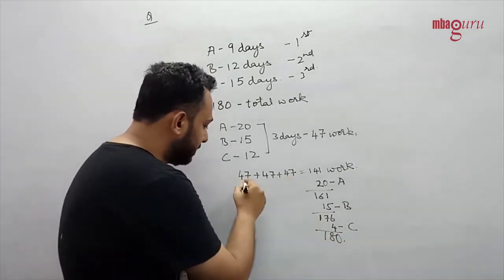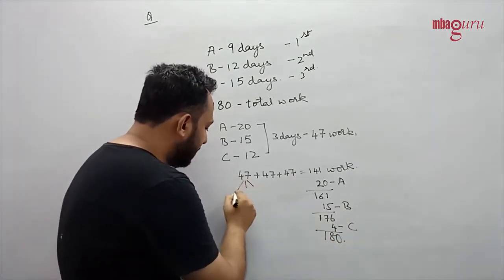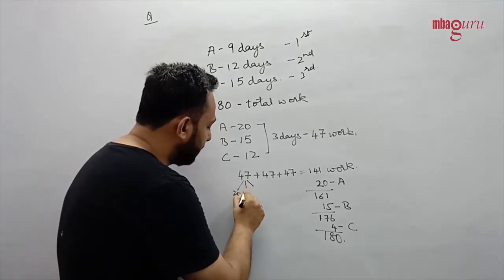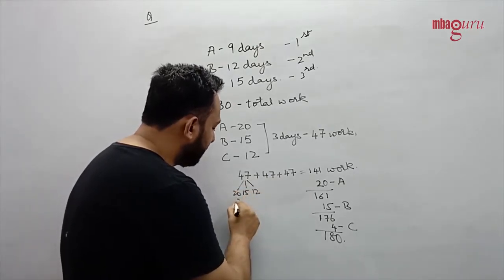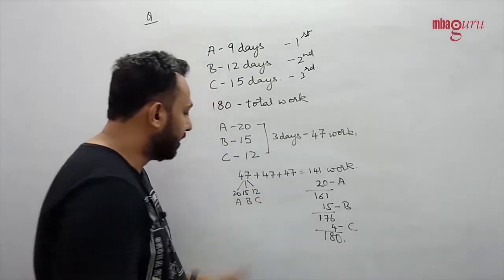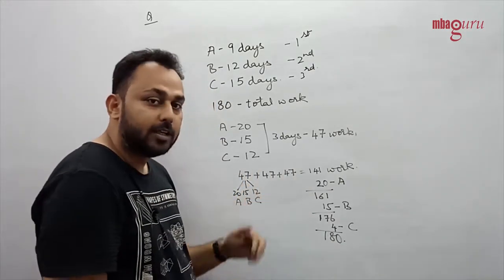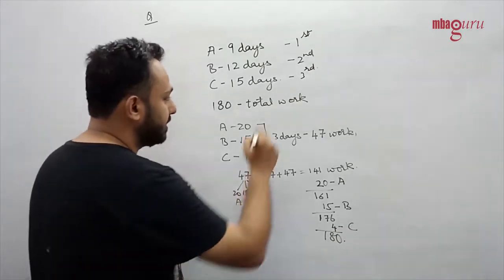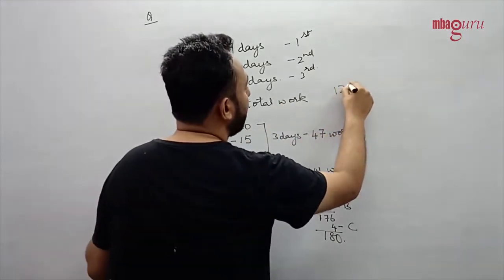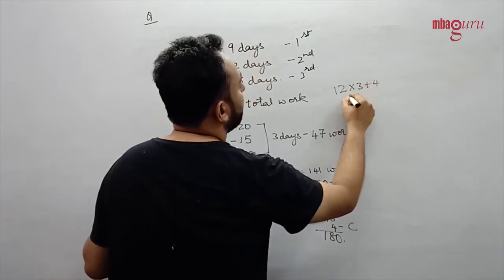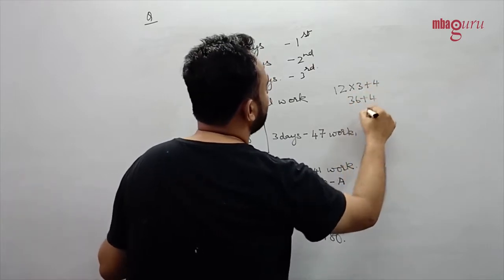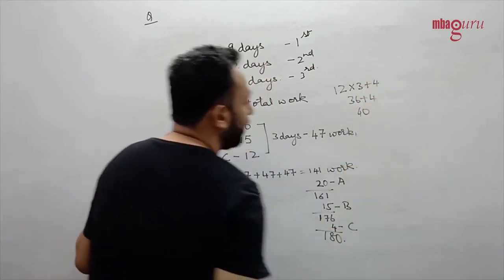Now notice in the last cycle C is only doing 4, but in the previous 3 cycles A, B, C do 20, 15 and 12 for A, B and C, which means in each of these 3 cycles C is doing 12. So the total amount of work done by C is 12 into 3 plus 4, or 36 plus 4, or total 40.